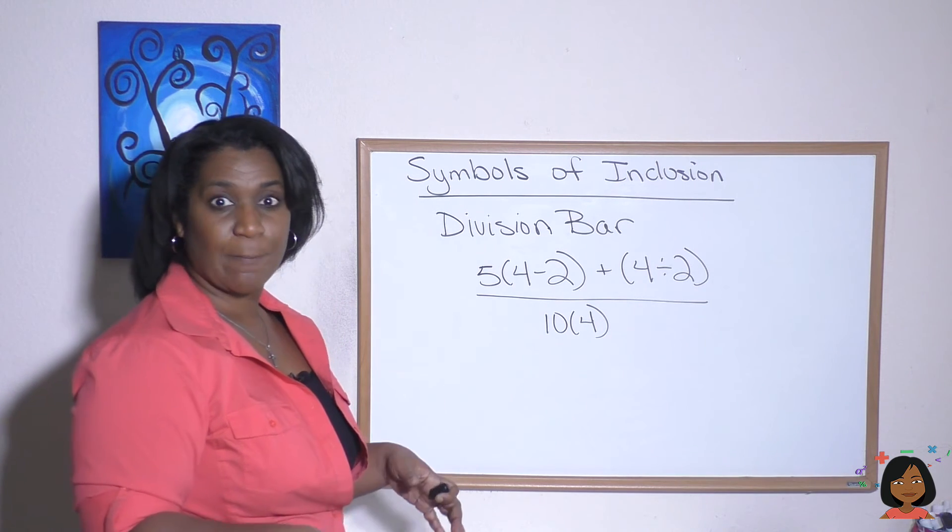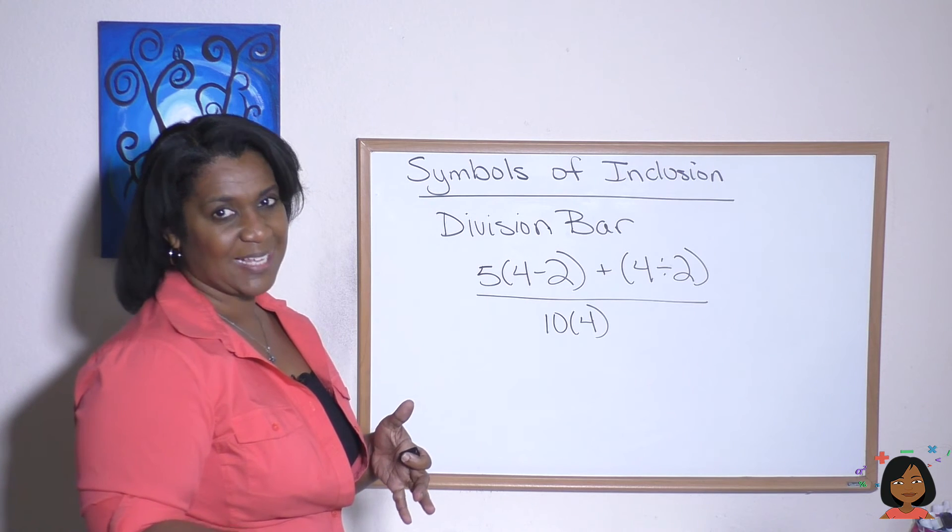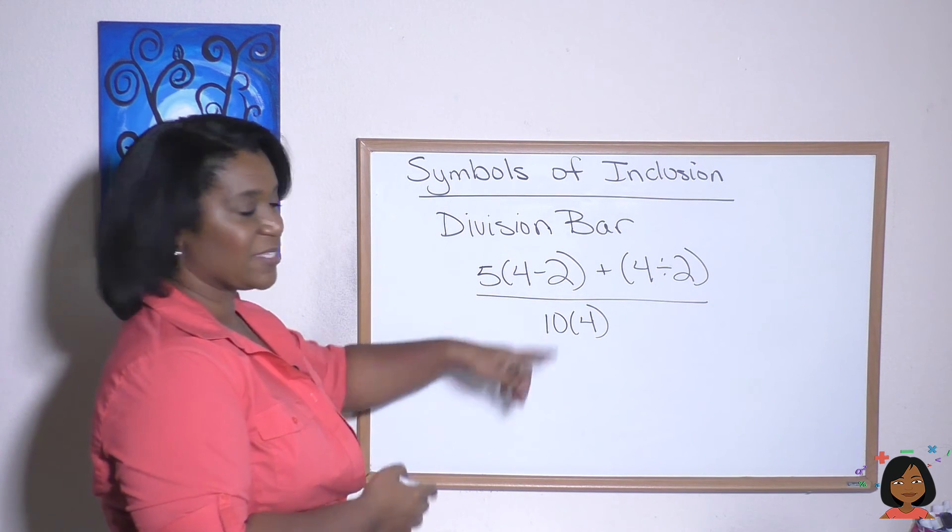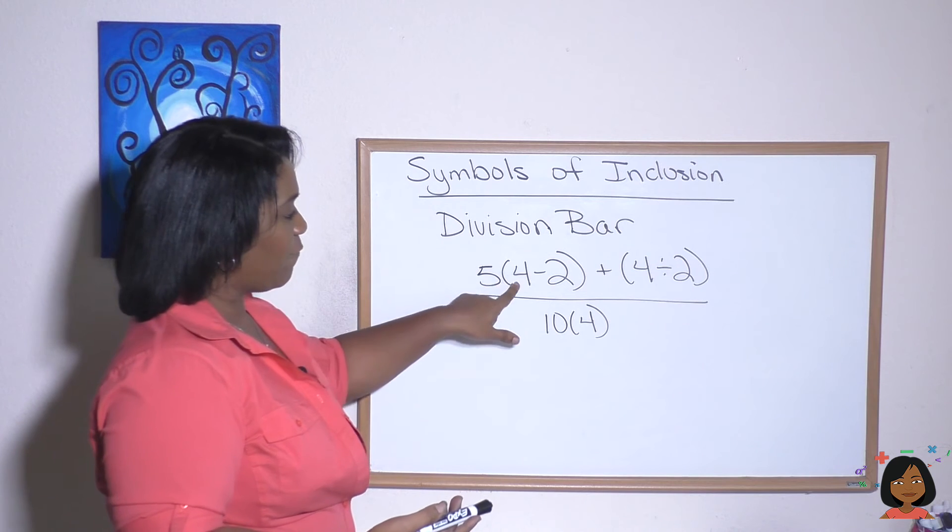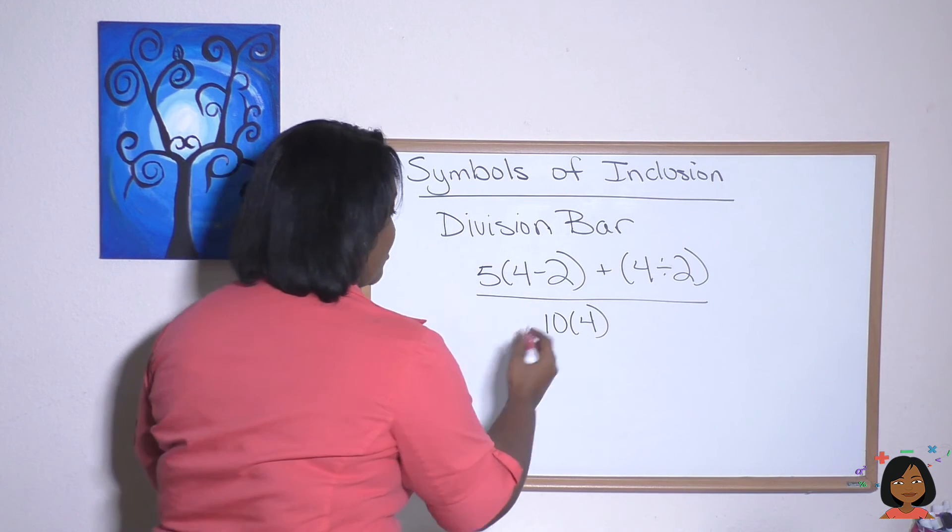Remember, Please Excuse My Dear Aunt Sally tells us what to work on. Well, we've got parentheses, let's work on those. 4 minus 2. I'm going to rewrite everything.